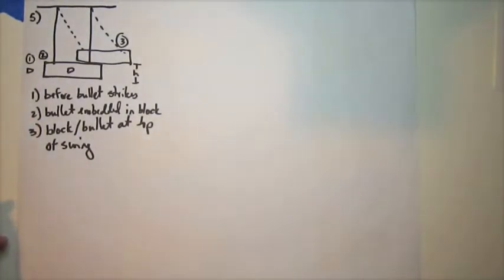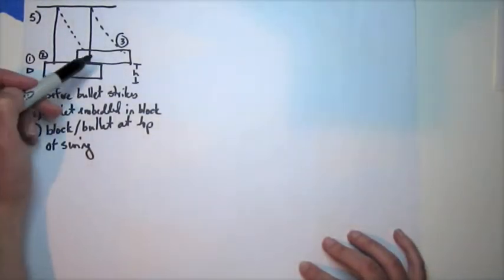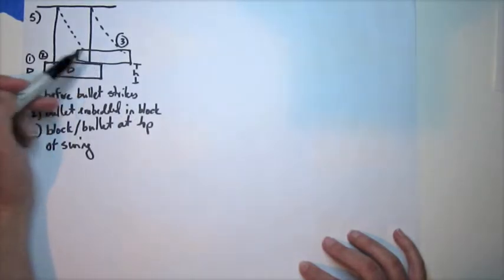In a ballistic pendulum problem, the first step is to, assuming that you want to figure out the initial velocity of the bullet, the first step is to figure out the velocity of the system after the collision using the height that you're given for the final position of the swing.